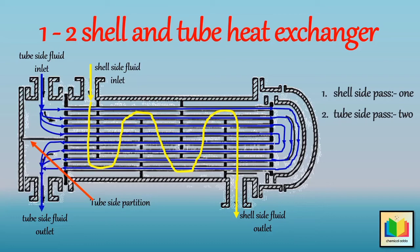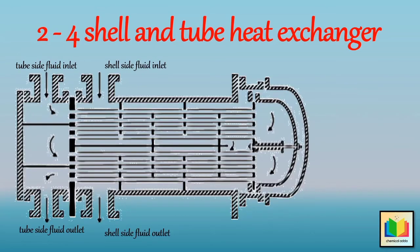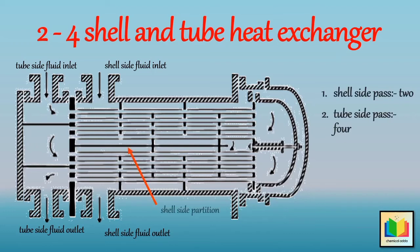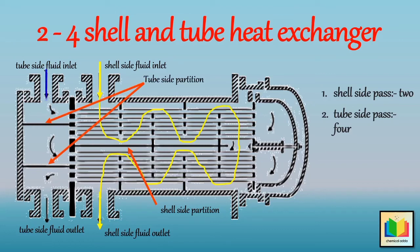Now let's see what is a 2-4 shell and tube heat exchanger. In a 2-4 shell and tube heat exchanger, the shell side fluid flows twice through the exchanger due to one shell side partition. And the tube side fluid flows four times through the exchanger due to two tube side partitions.